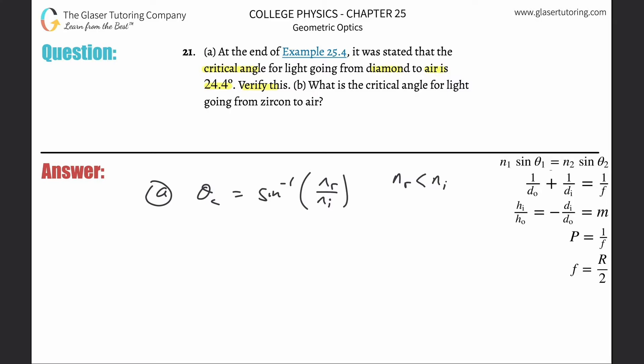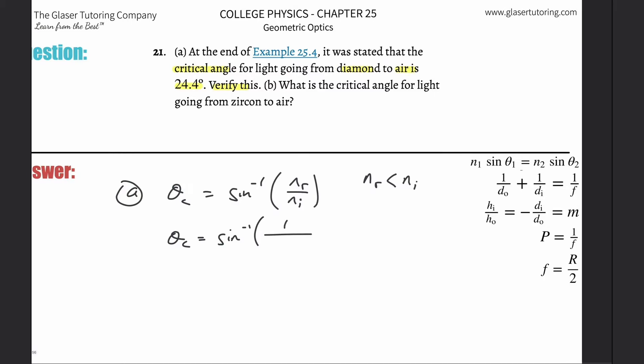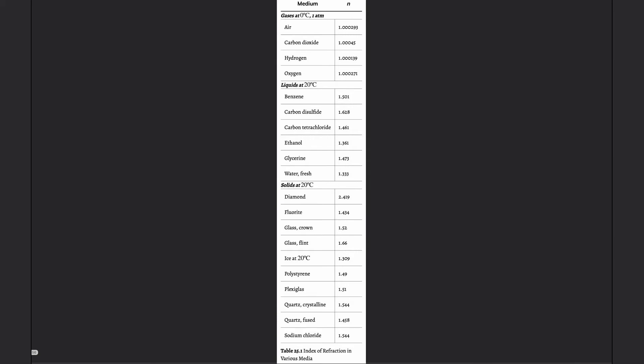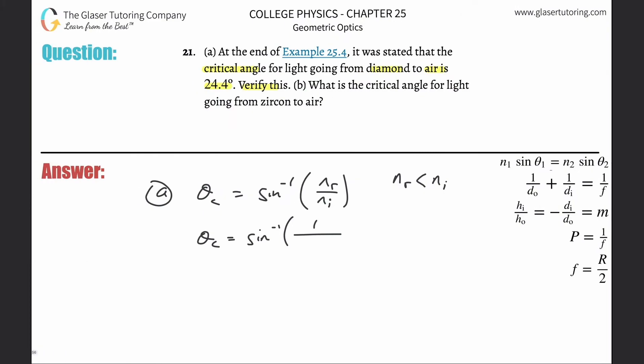So it says light is going from diamond to air. So this is the incident material and this is the refracted material. Okay, so basically then the critical angle is equal to the inverse sine of, the air is the refracted part, just assume it's one, it's very close. And then diamond, we have to know the value of diamond. So you go to your table and just look it up. Go to solids, here's diamond, 2.419. So you plug it in, 2.419.